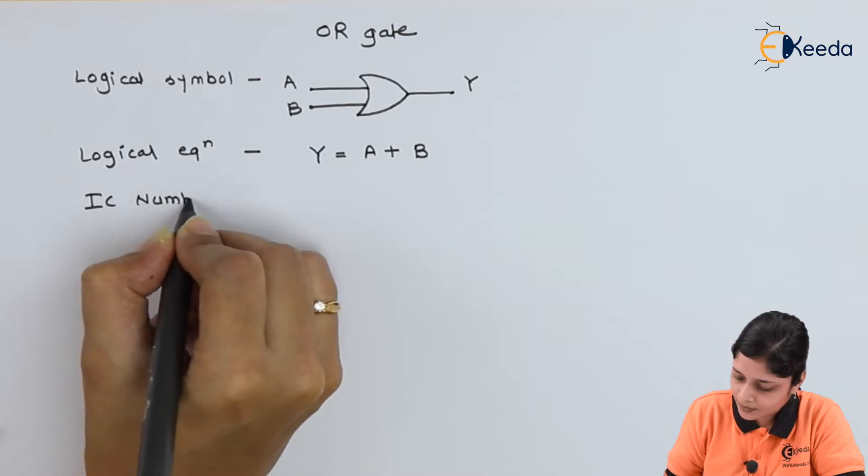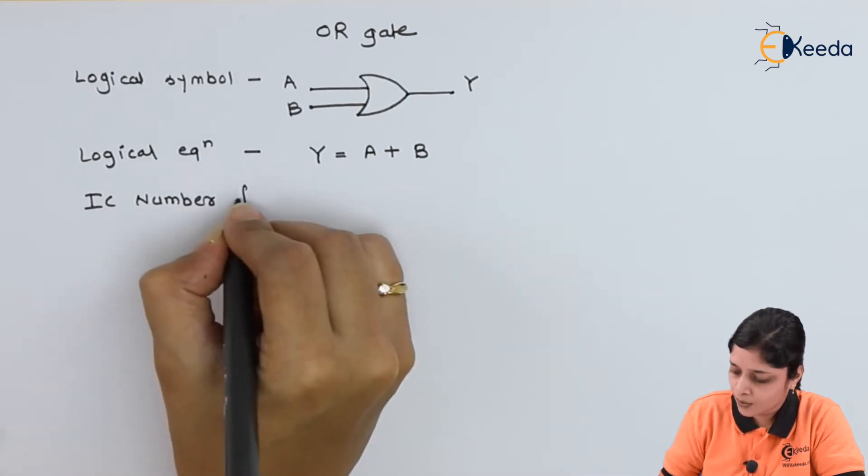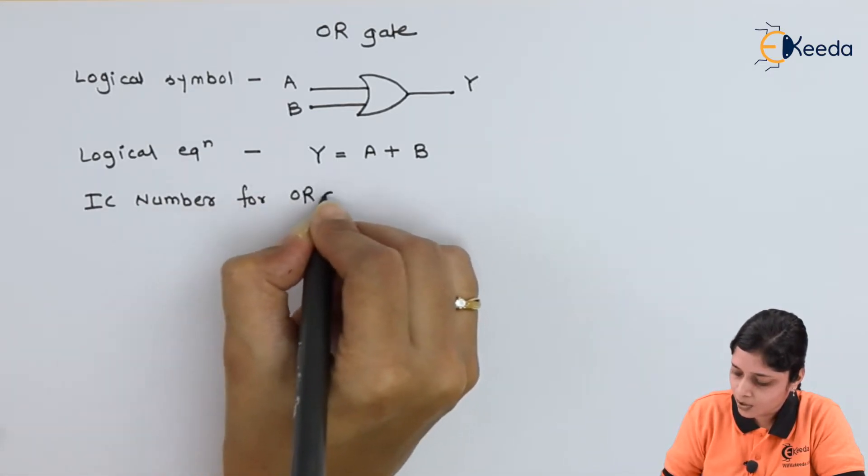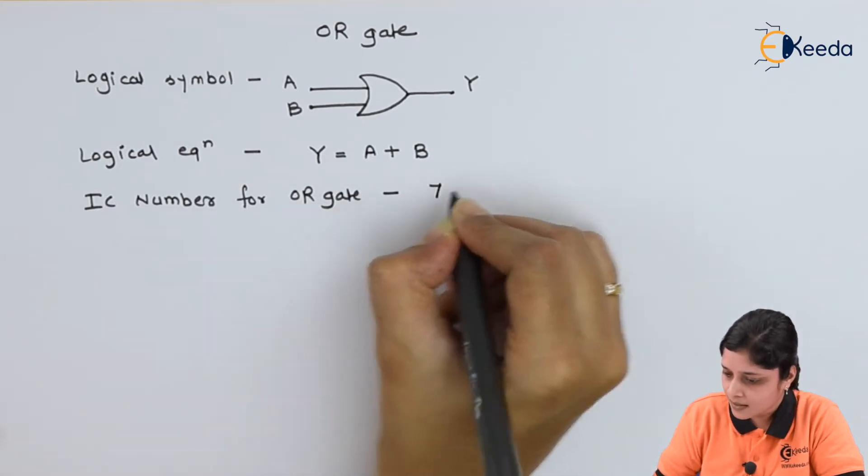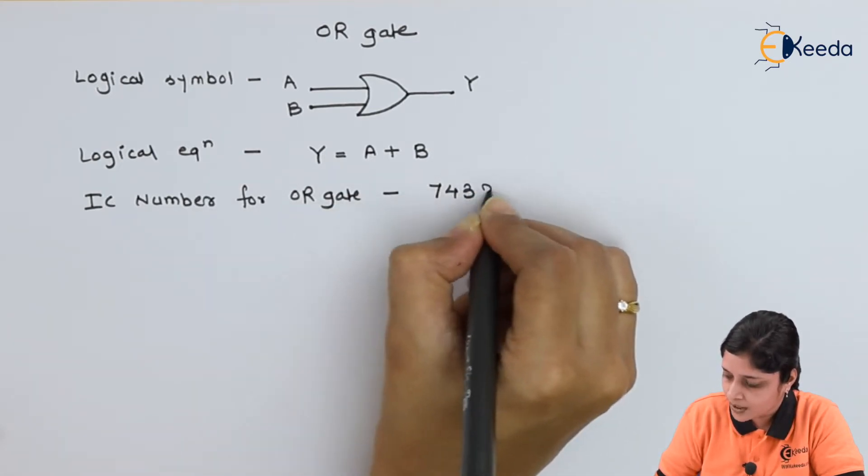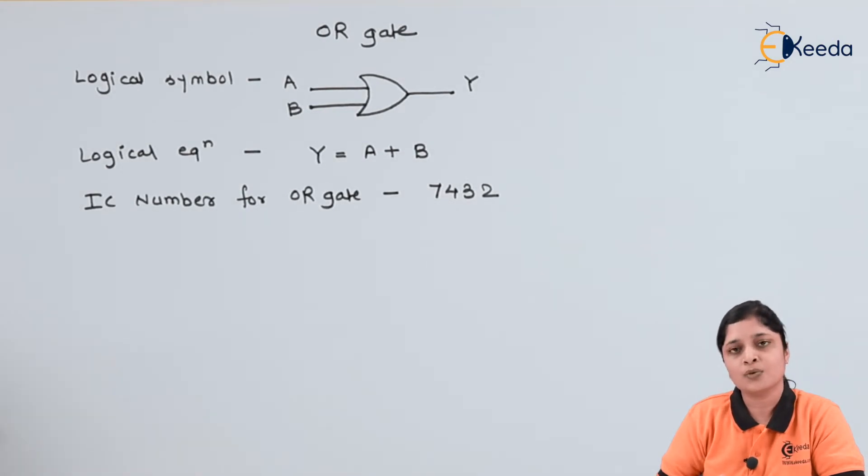The IC number for OR gate is 7432. You should always remember this IC number for practical purposes.